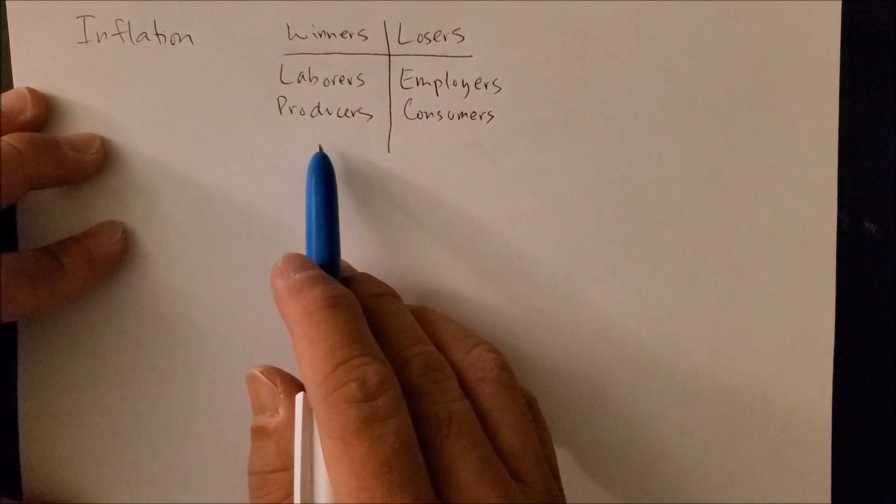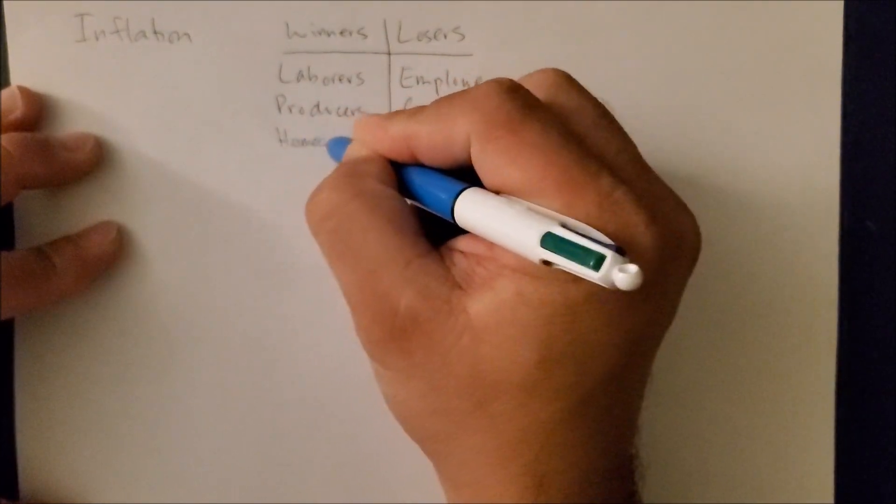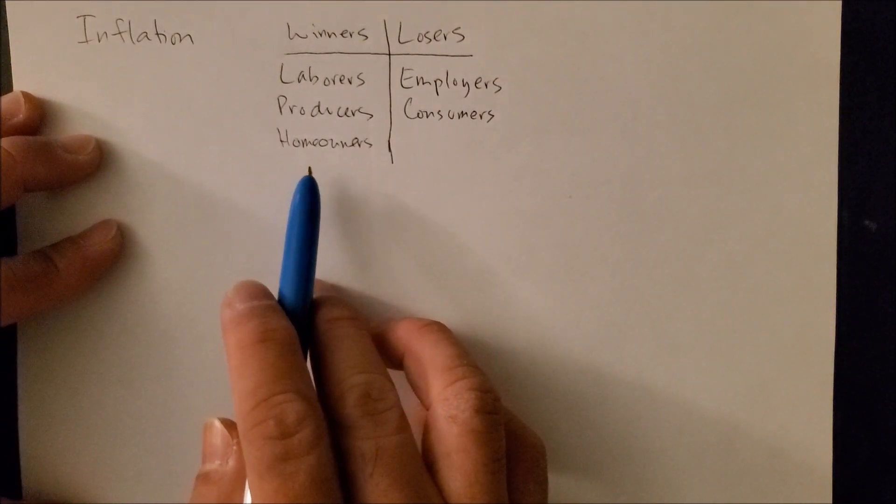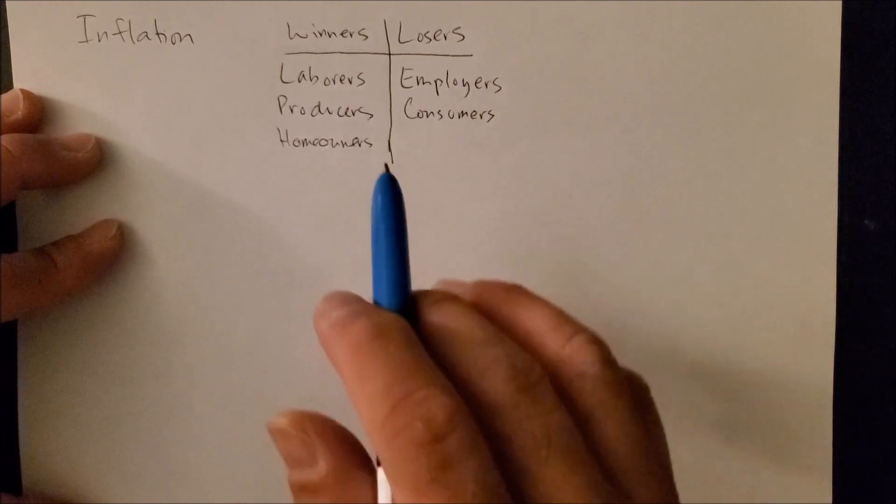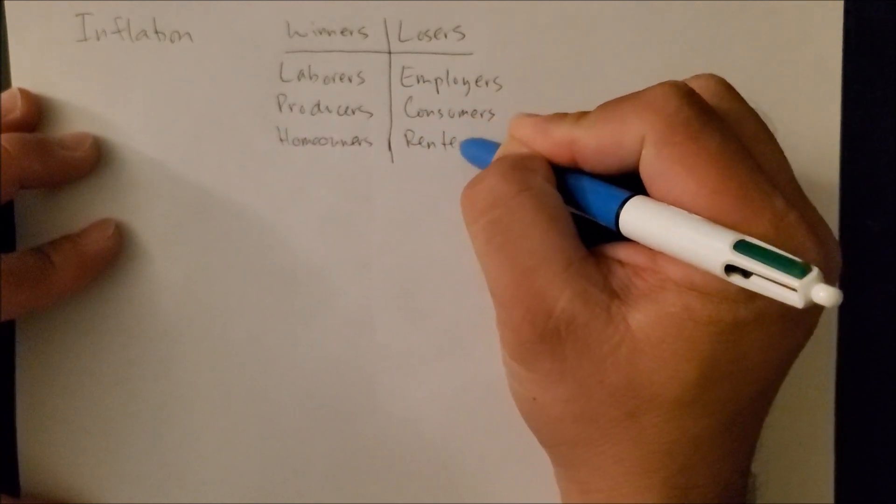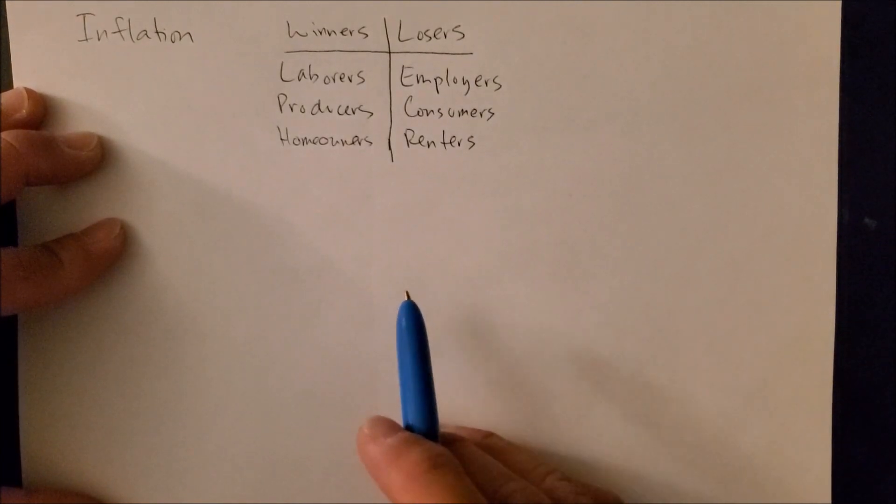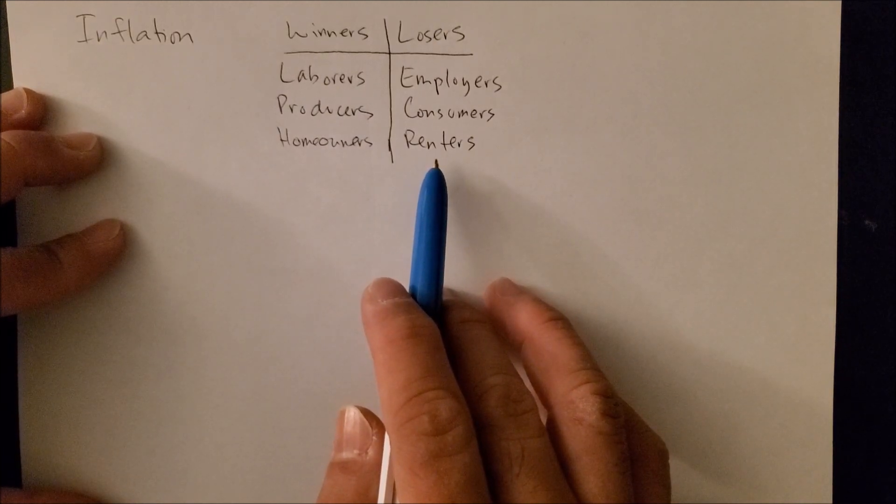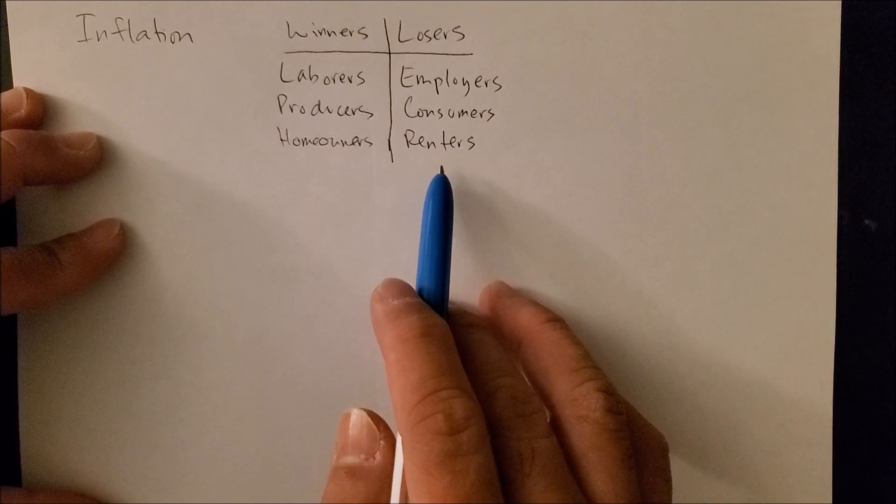A third group that wins with inflation are those who are homeowners. They see the value of their home increase, and that's great for them, and now they can build equity. And for those who lose in the same scenario are those who are renters. With a higher level of goods and services, which could also lead to a higher cost of rent, renters are now going to have to pay 30%, 40% of their income per month on rent alone.